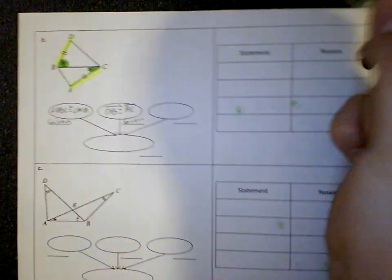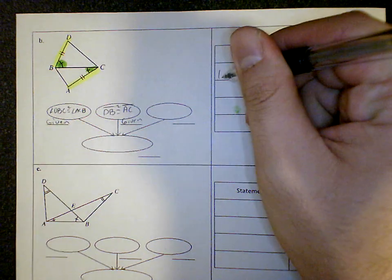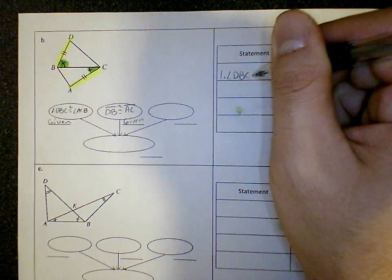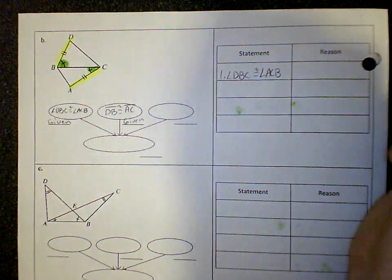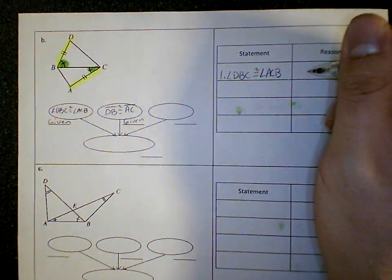And let's not forget the two column proof. So first one angle DBC is congruent to angle ACB. And my reason for that was given.